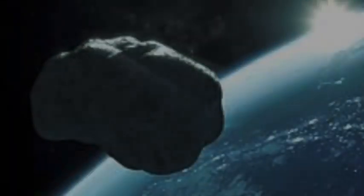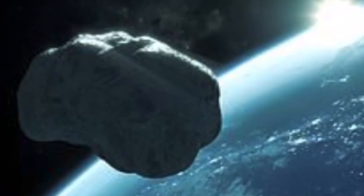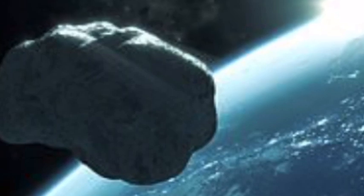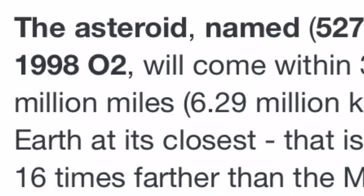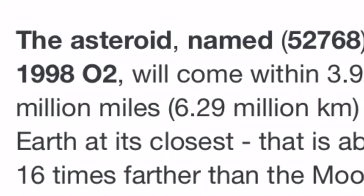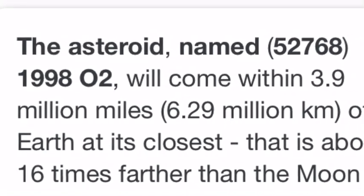An asteroid measuring 1.2 miles across will be visible to small telescopes tonight, as astronomers confirm the rock will swing by on close approach. The asteroid, named 52768 1998-O2, will come within 3.9 million miles (6.29 million kilometers) of Earth at its closest, about 16 times farther than the moon.